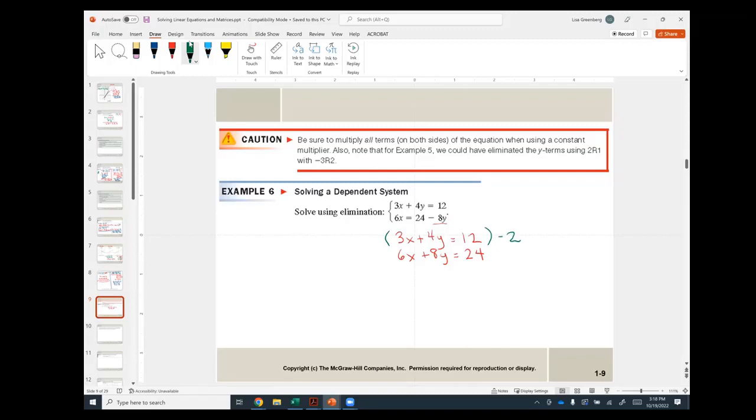So this becomes negative 6x minus 8y equals minus 24. And then I'm just going to copy the bottom one, 6x plus 8y equals positive 24.